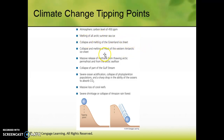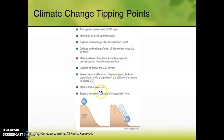Collapse and melting of most of the western Antarctic ice sheet, massive release of methane from thawing Arctic permafrost and from the Arctic seafloor — as melting happens, it's sort of a positive feedback loop. Collapse of part of the Gulf Stream, severe ocean acidification, massive loss of coral reefs, severe shrinkage or collapse of the Amazonian rainforest. These tipping points are where all the momentum takes over.